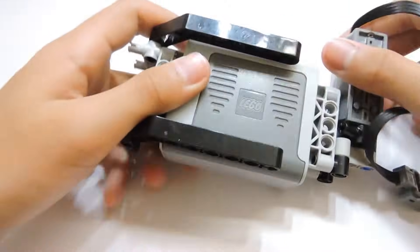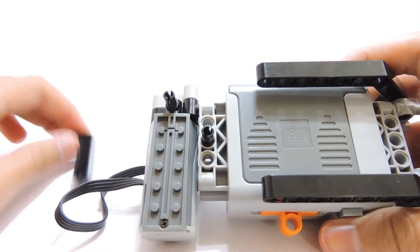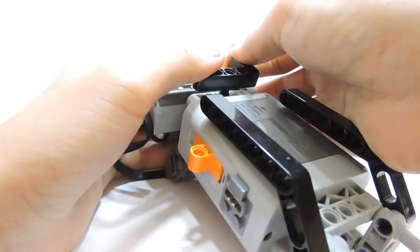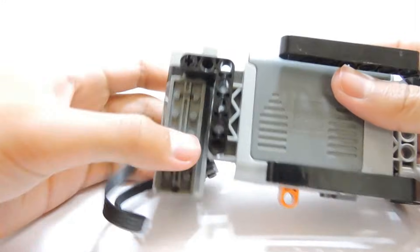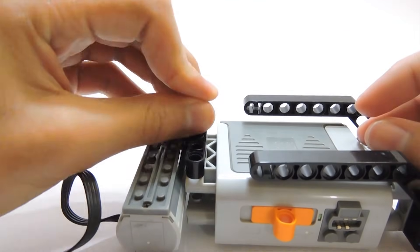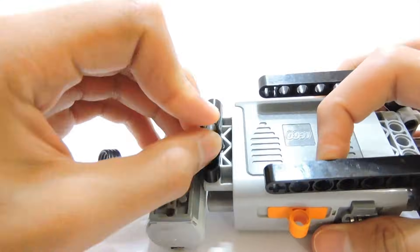Now, we turn it over and using a connector and an L-shaped beam like this we fasten the motor. Next, we take two of these and attach them to the L-shaped beam just like that.